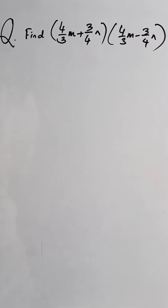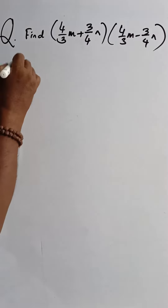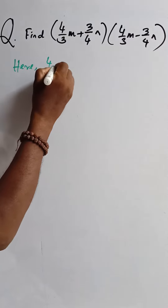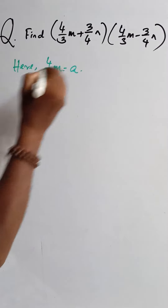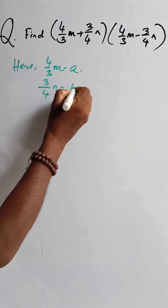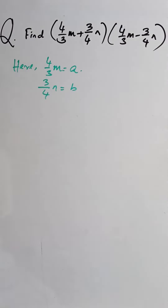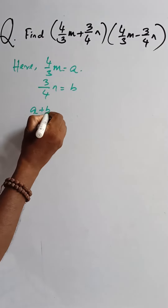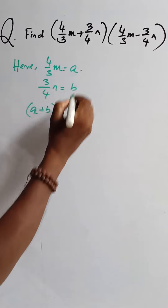Find (4/3m + 3/4n)(4/3m - 3/4n). Here, let 4/3m be 'a' and 3/4n be 'b'. Now we have (a + b)(a - b).